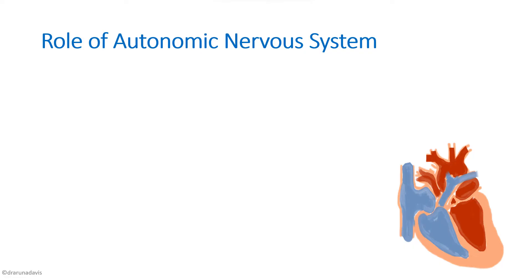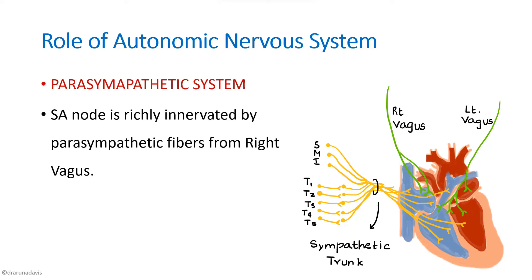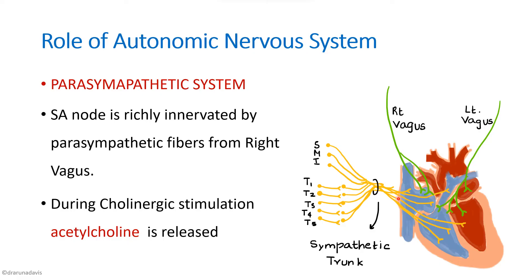Now we discuss the role of the autonomic nervous system. The heart is richly supplied by both parasympathetic and sympathetic fibers. The SA node is innervated by parasympathetic fibers from the right vagus nerve. During cholinergic stimulation, acetylcholine is released.